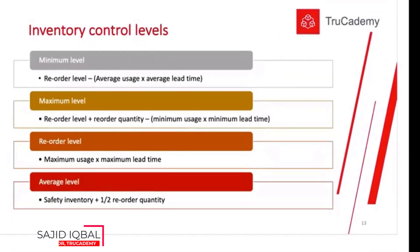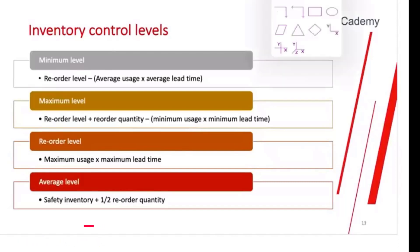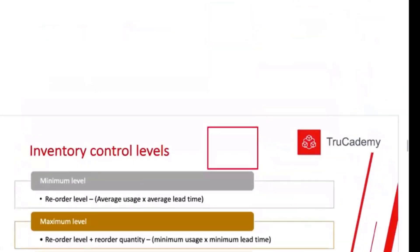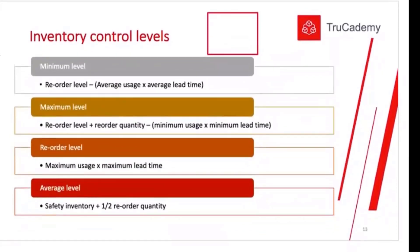Next, inventory levels. To understand inventory levels, let's make an example. This box represents our warehouse. In a warehouse, to control our inventory, we can establish different control levels. First of all, the maximum inventory level — let's say the maximum capacity of our warehouse is to hold 1,000 kilograms. Every warehouse will definitely have some maximum capacity, so this is the maximum level of inventory that we can hold.